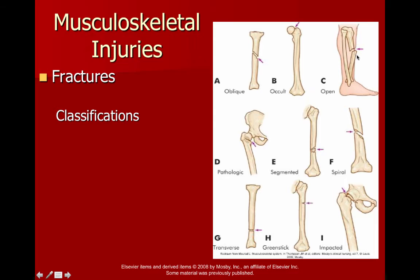An open fracture means the bone has actually gone outside of the skin layer — it's sticking out — versus closed, which most of us have experienced. Open is much more dangerous mainly due to risk for infection. Every time you open up that skin layer, a lot of bad things can come in, and it's scary to imagine organisms going straight into the bone and straight into the bone marrow.